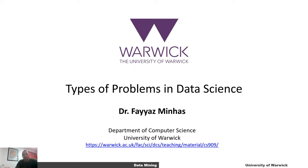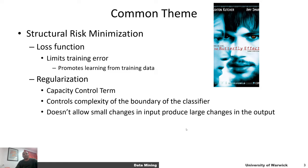Hello and welcome to another session on data mining. Today we are going to be talking about different types of learning problems in data science and machine learning. Overall, we've learned about structural risk minimization, which says that we should minimize training error using a loss function and also regularize to ensure we don't fall into the trap of the butterfly effect, where a small change or noise in the input has a significant effect on the output.